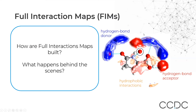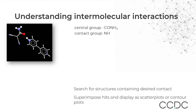Before moving on to how we generate full interaction maps from Mercury, we want to see what happens behind the scenes — where the maps come from and how we derive them. Full interaction maps are built from the data in the CSD, so we can mine the CSD to find different interactions and learn from them.